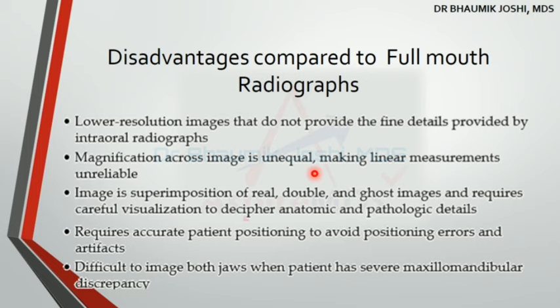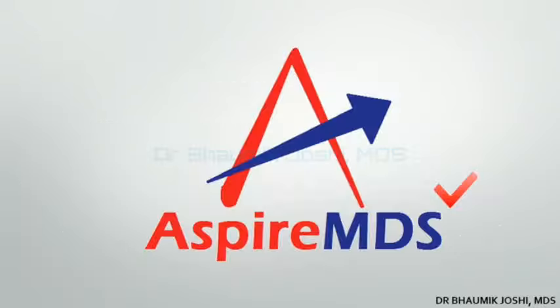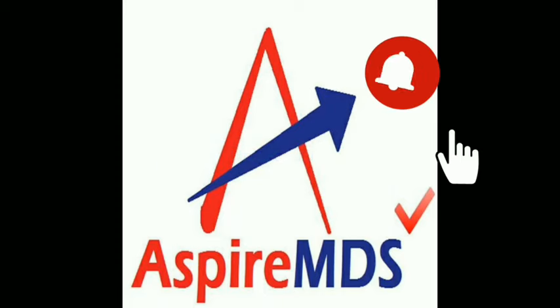Additionally, accurate patient positioning is required to avoid positioning errors. It is also difficult to image both jaws together when there are jaw discrepancies — for example in Paget's disease or fibrous dysplasia — because if the maxilla and mandible are not at the same level, you cannot get a proper image of both in the same exposure. That's all from this lecture; if you have doubts, feel free to post in the comment section.